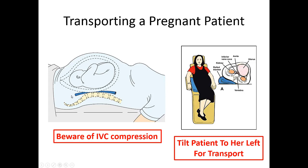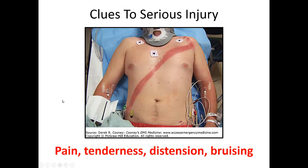Clues to a serious abdominal injury: your best hint will be the patient's pain. Their abdomen will be either very distended or incredibly tender, and they'll be guarding. Look for bruising patterns as well. If a patient has other distracting injuries — femur fracture, arm fracture, or a head injury — they might not focus on abdominal pain, so make sure you're doing a good secondary assessment and considering abdominal trauma based on the mechanism.